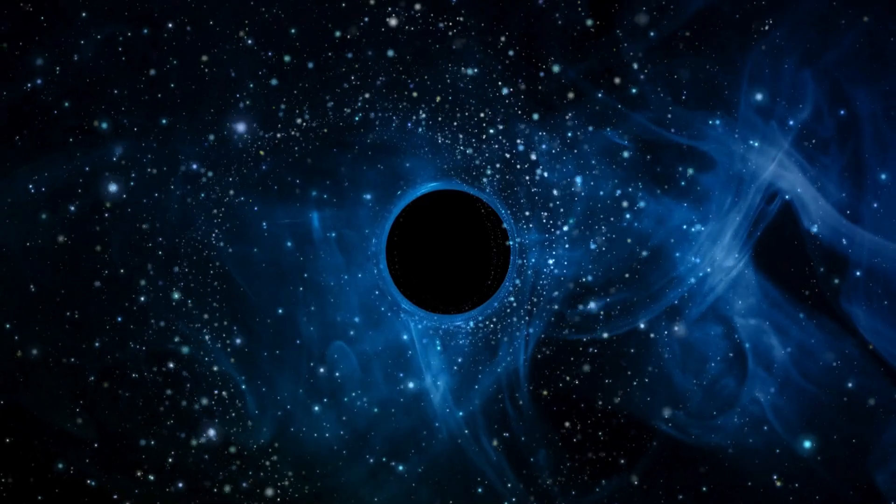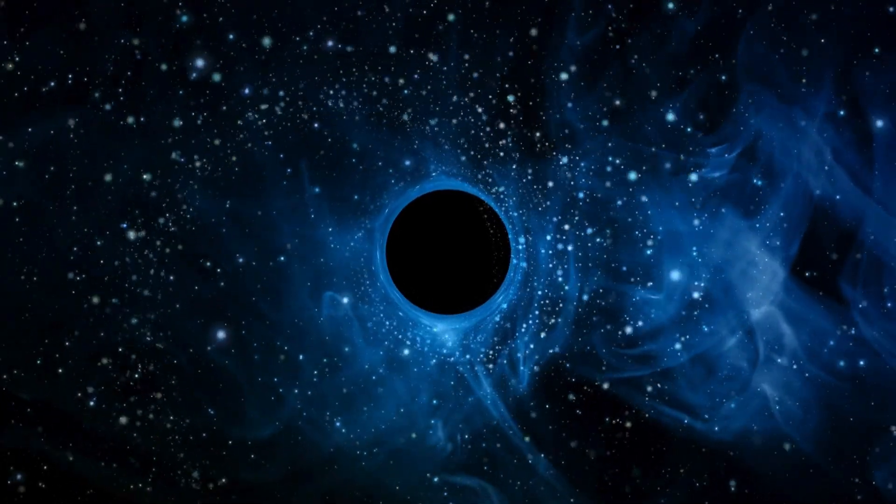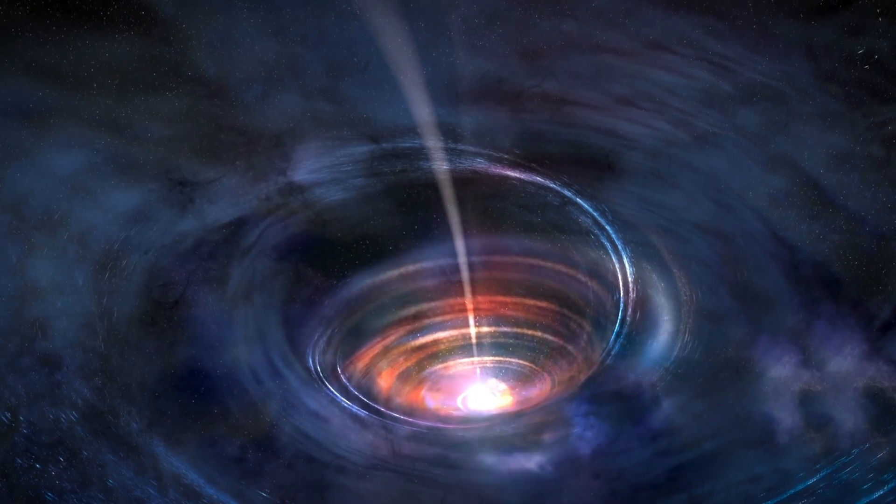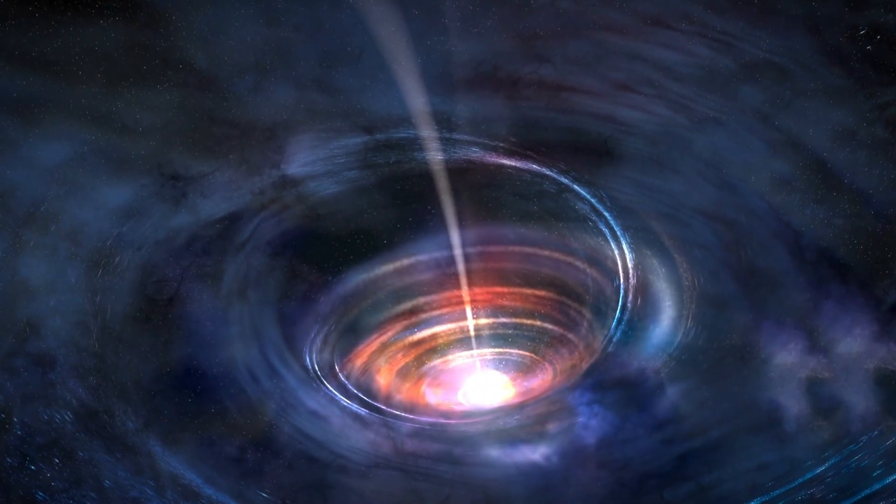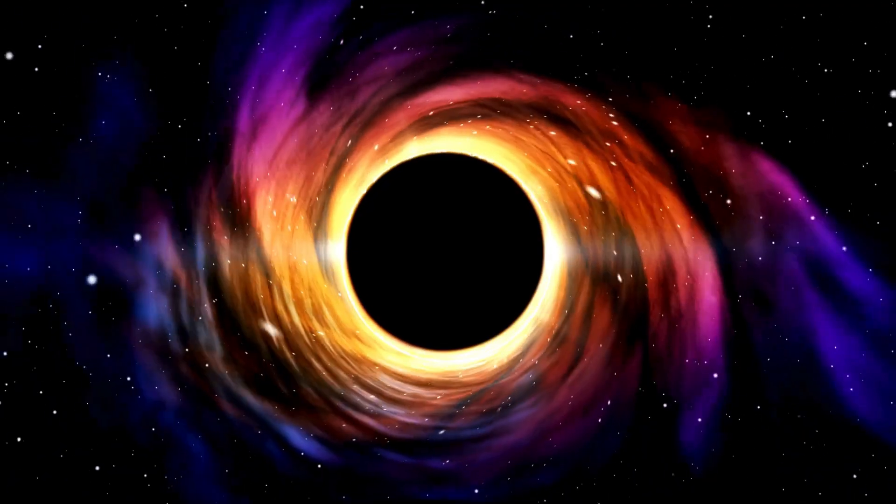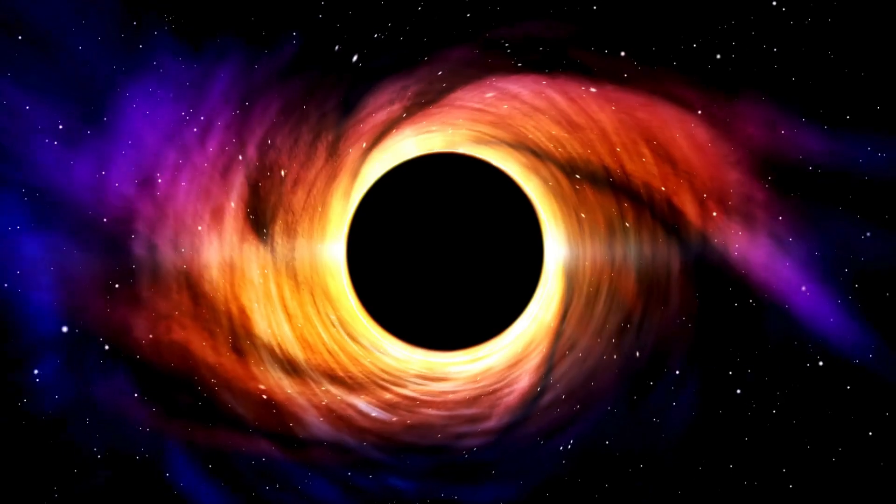In 1916, Albert Einstein published his theory of general relativity, which predicted the existence of black holes. At the time, the idea was purely hypothetical. It took another 50 years for scientists to find evidence of their reality, which occurred during the 1960s.